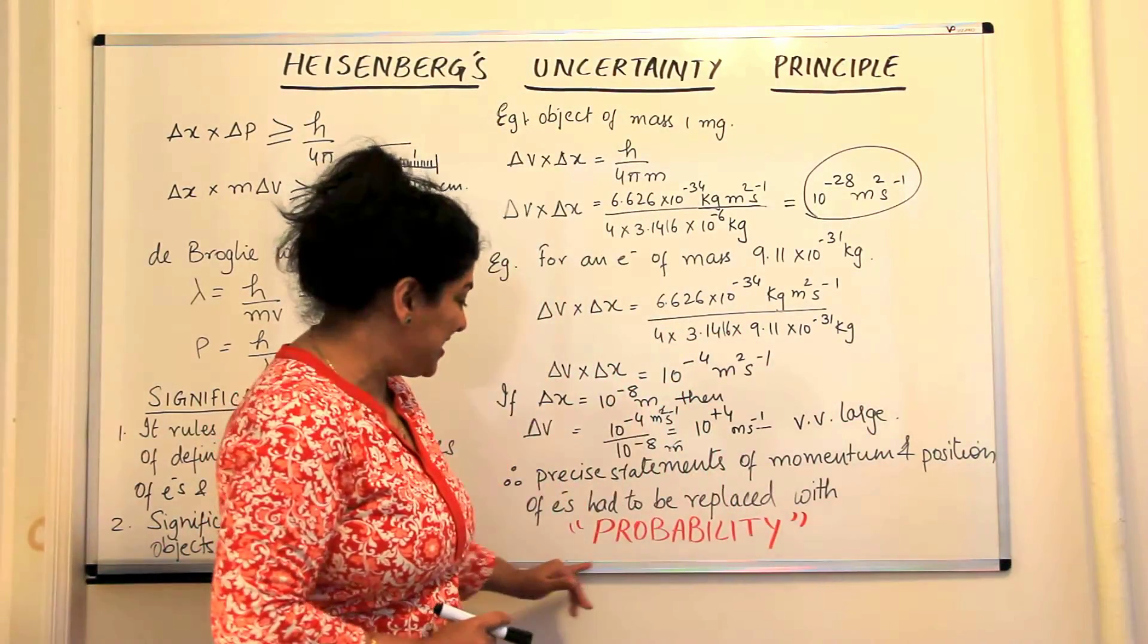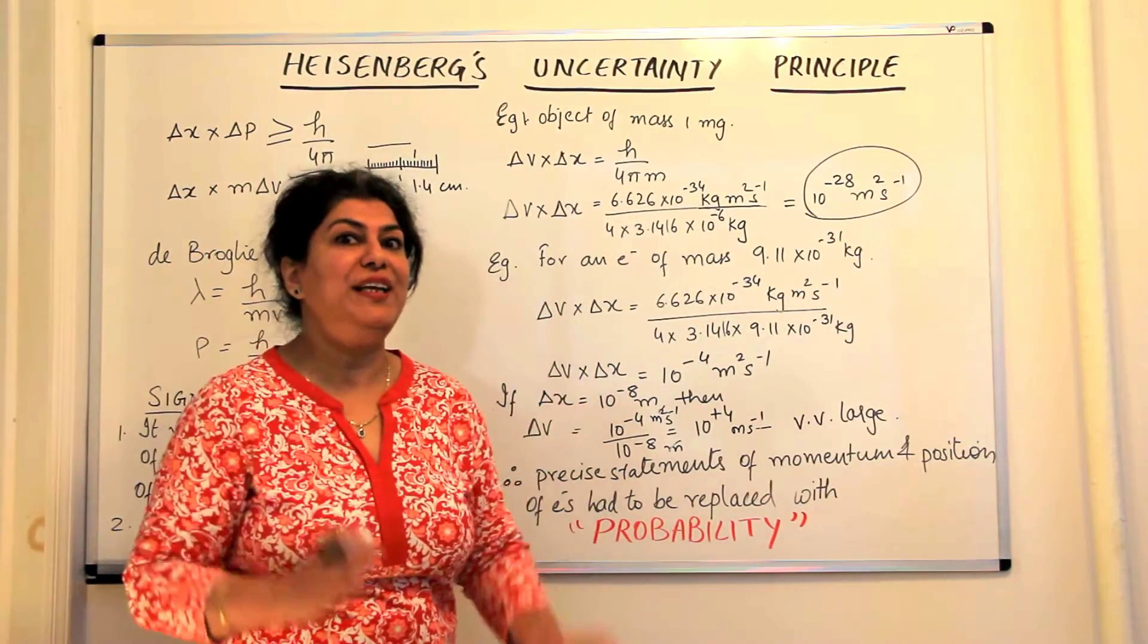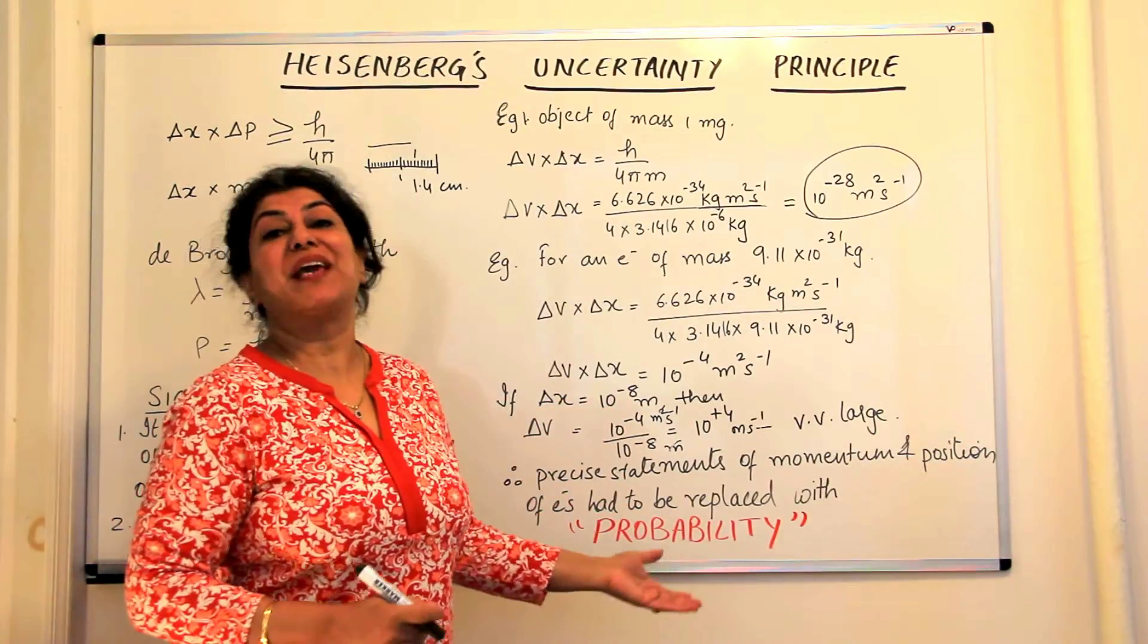I've written this in red because this word—the probability of finding an electron—formed the backbone of the quantum mechanical model.